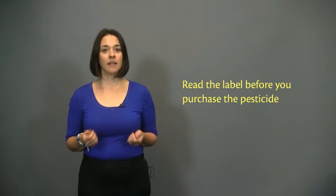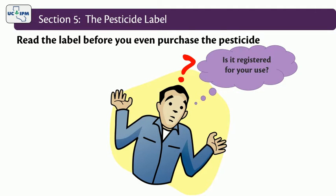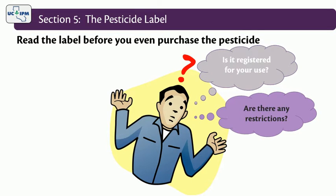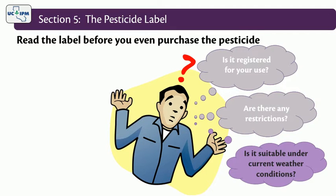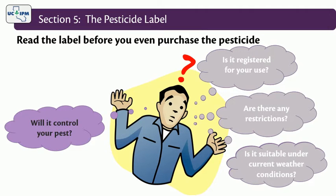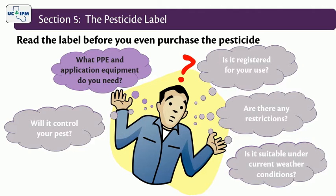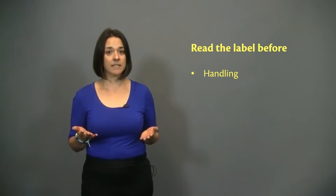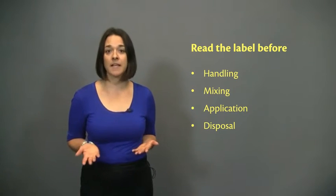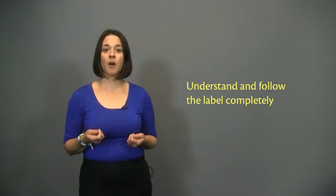When should you read the pesticide label? First, make sure you read the label before you even purchase the pesticide. Is it registered for your intended use? Are there any restrictions or other conditions that prohibit using this pesticide at the application site? Is it suitable under current weather conditions? Will it control the life stage of your pest? Next, what personal protective equipment and special application equipment will you need to apply the pesticide? Then, always read the label before any handling, mixing, application, or disposal of the pesticide. Don't rely on your memory. It is so important to understand the pesticide label and follow it completely.